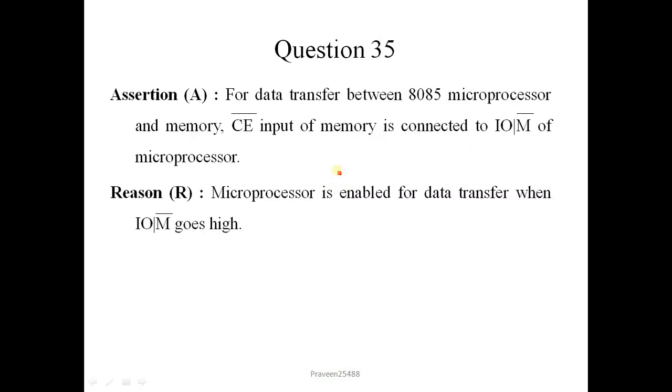Next question is for data transfer between 8085 microprocessor and memory. The chip enable input of memory is connected to IO/M bar of microprocessor. This CE is the active low signal which is connected to IO/M bar control line to enable the data transfer to memory. So this statement is correct. Microprocessor is enabled for data transfer when IO/M bar goes high. This bar on the line indicates that when this signal will go to low it will enable the data transfer to memory. And when it will go high it will enable the data transfer to input output device. So this statement is not correct because we have to transfer the data to memory. So correct option is 3.